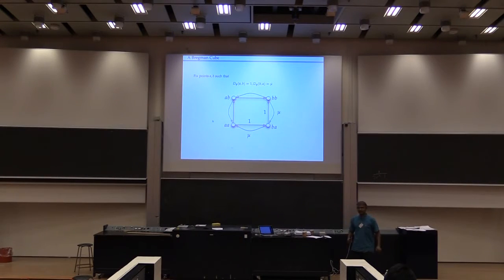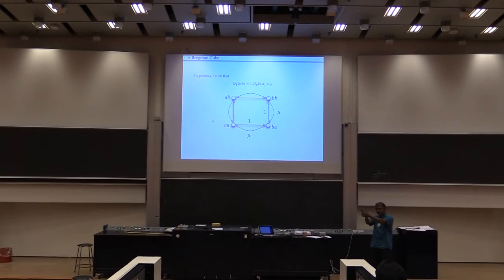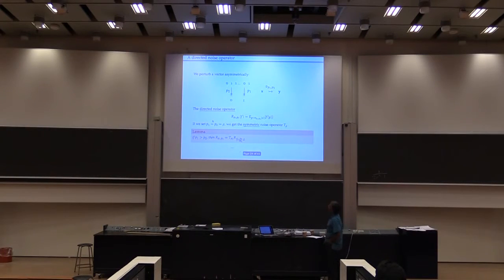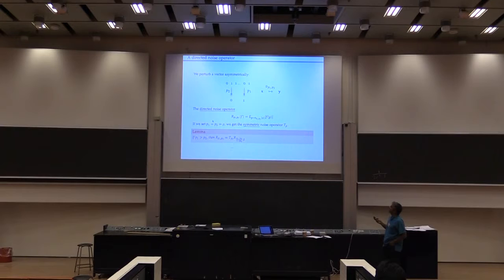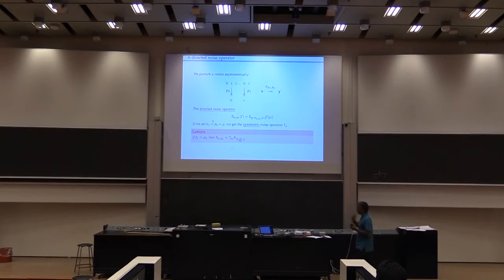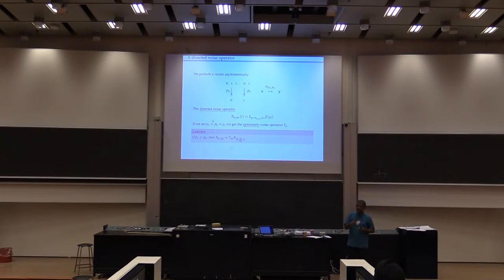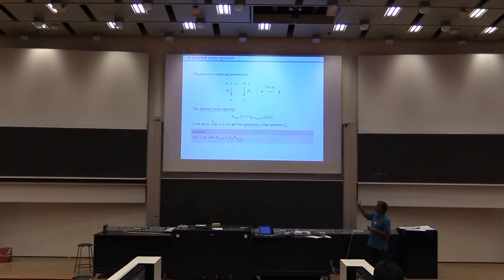Then we find a notion of perturbation — because we're talking about approximate near-neighbor search — where there's a different probability of going from one to zero versus zero to one. You're not just perturbing things uniformly; you're perturbing them asymmetrically. This is called a directed noise operator. You have a function defined over the cube, and the directed noise operator gives the expected value of the function after perturbing the points asymmetrically. This operator is what's used in Boolean function analysis and Fourier methods.